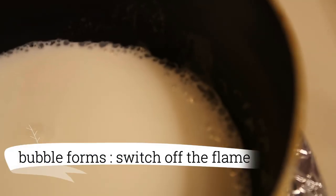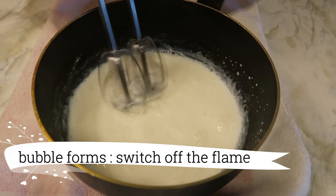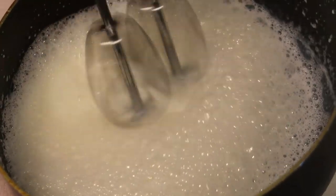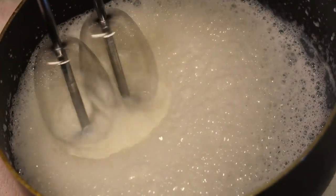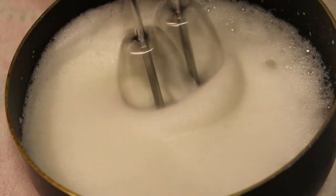medium flame until the bubble forms. Now switch off the flame and with the help of an electric beater, beat the milk until the milk becomes nice, creamy, and frothy.